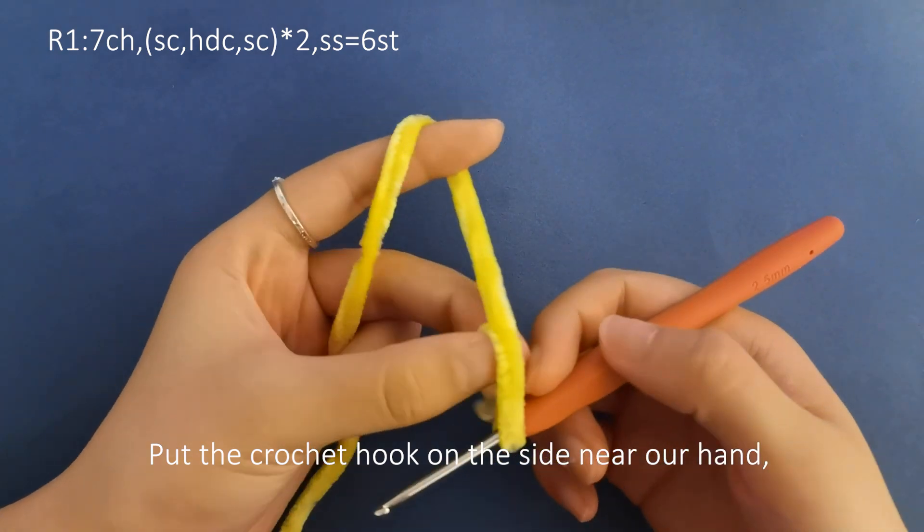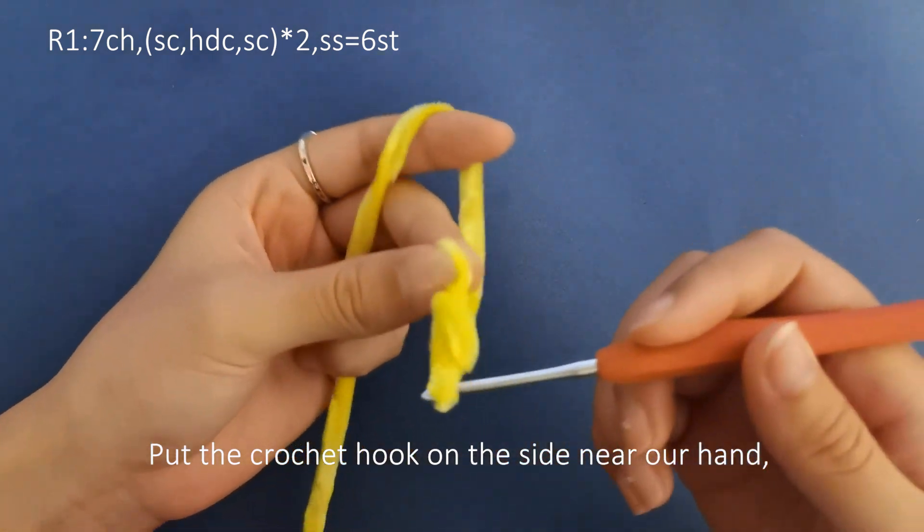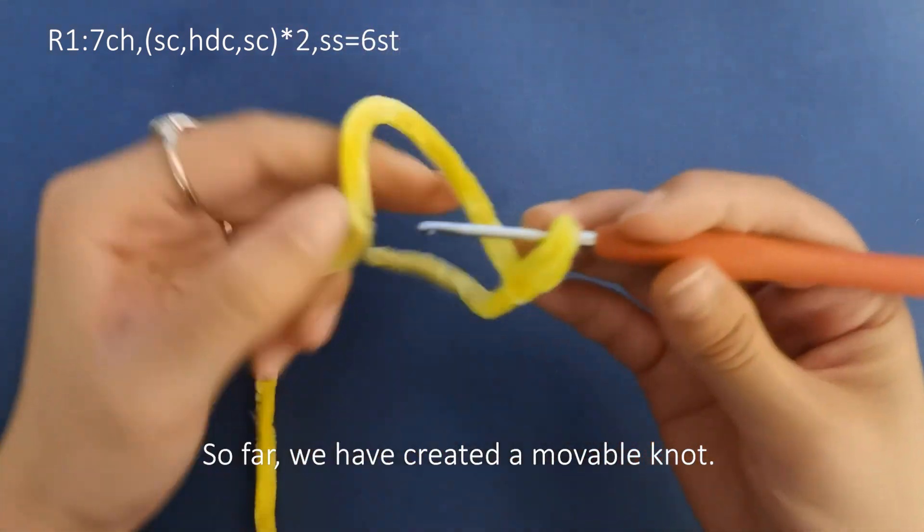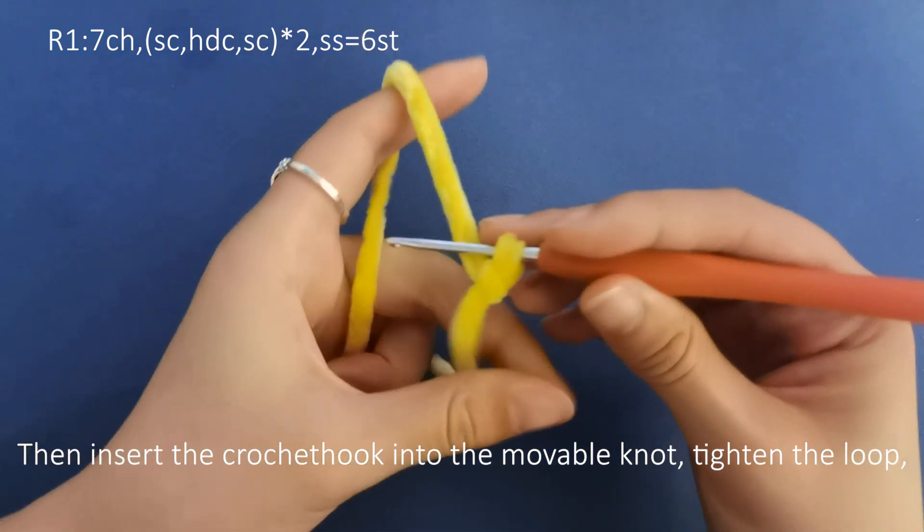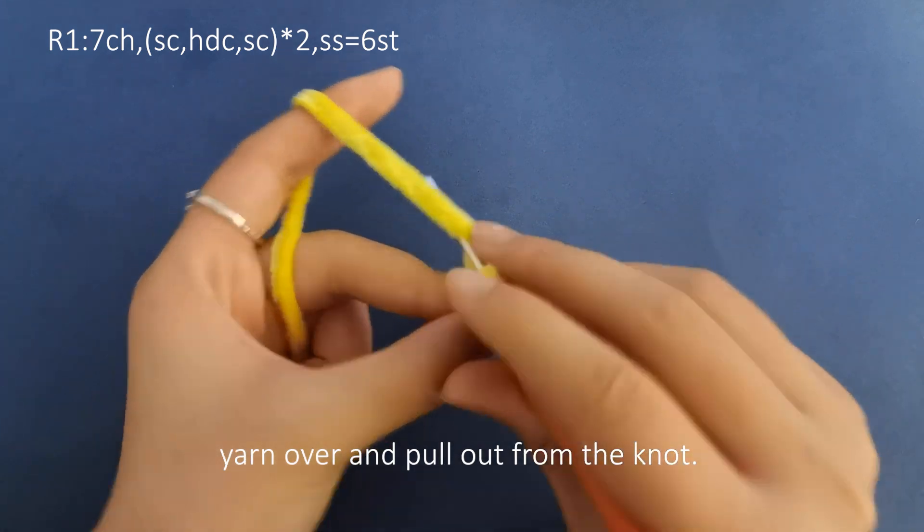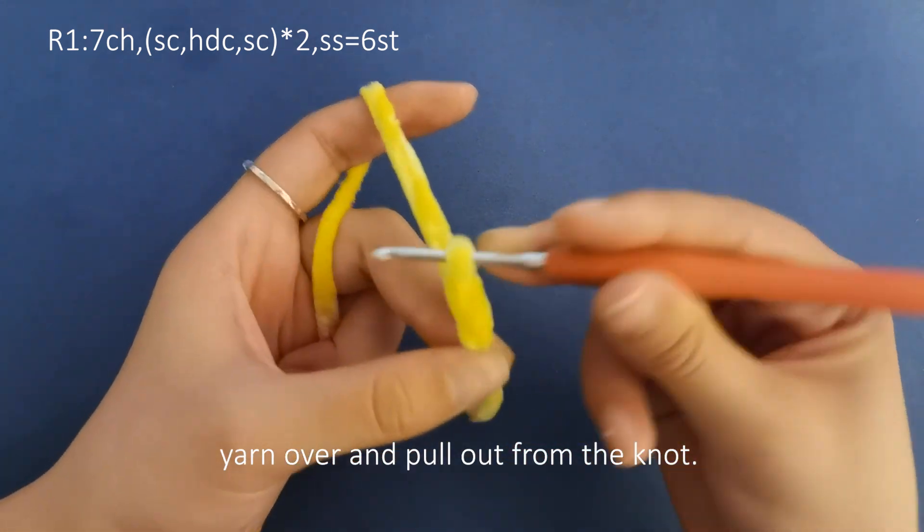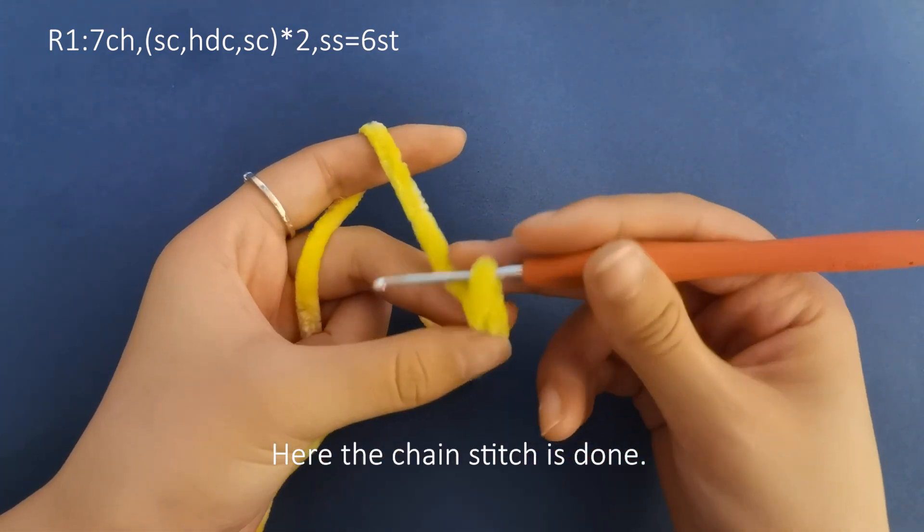Put the crochet hook on the side near our hand. So far, we have created a movable knot. Then insert the crochet hook into the movable knot, tighten the loop, yarn over and pull out from the knot. Here the chain stitch is done.